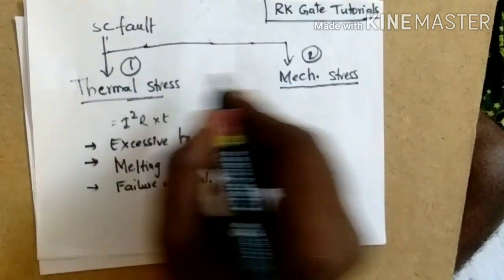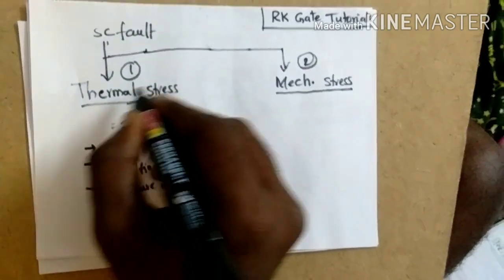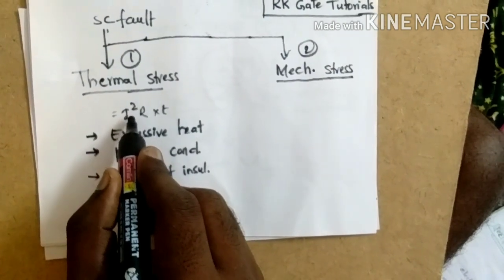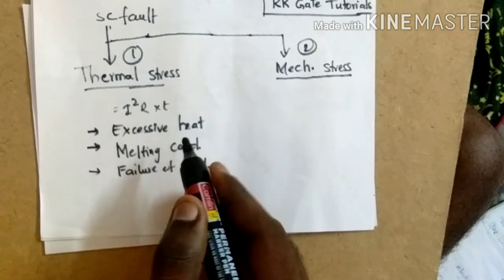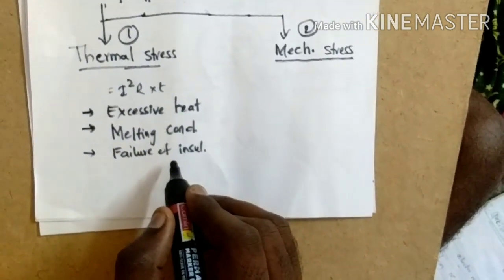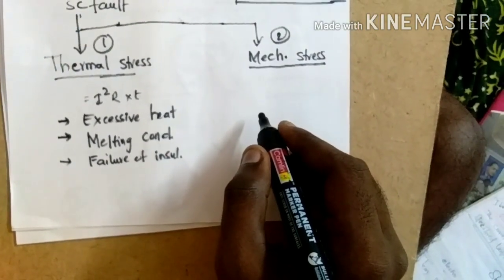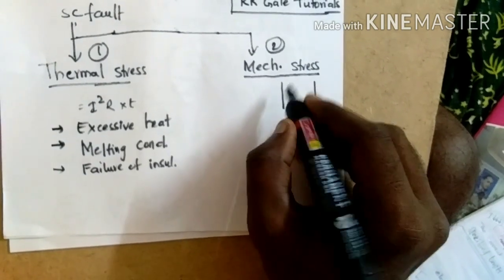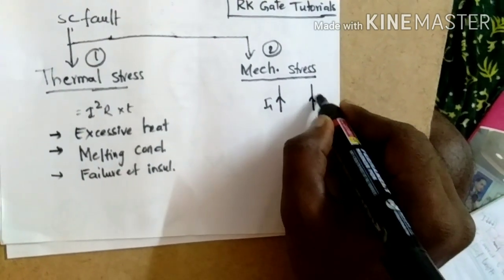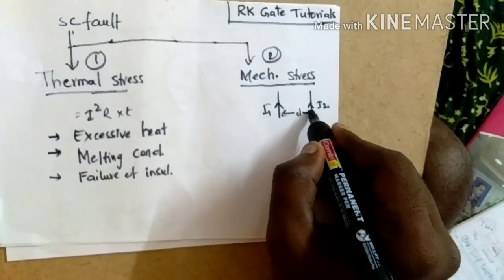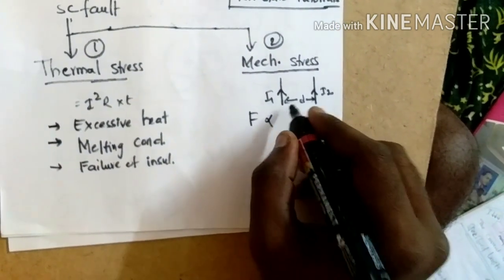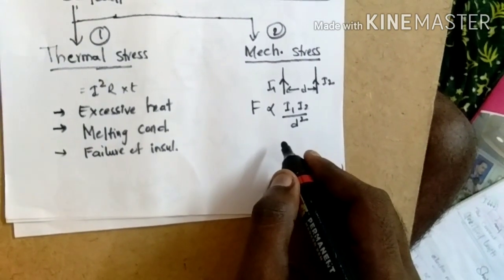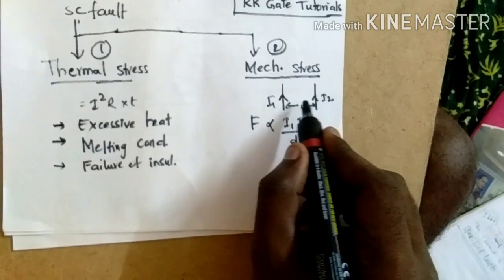Now let us look at mechanical stress. Consider two conductors separated by a distance d, with currents I1 and I2 flowing through them. The force between them is directly proportional to the product of currents I1 times I2 divided by the square of the distance d between them.